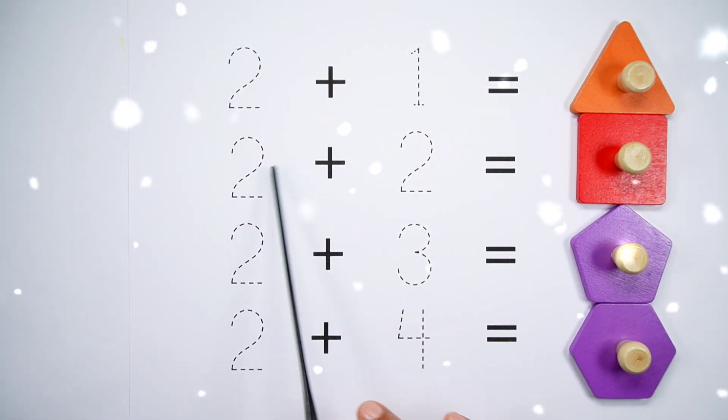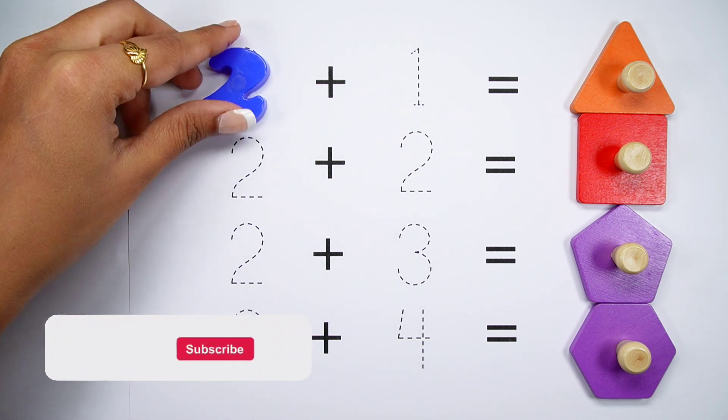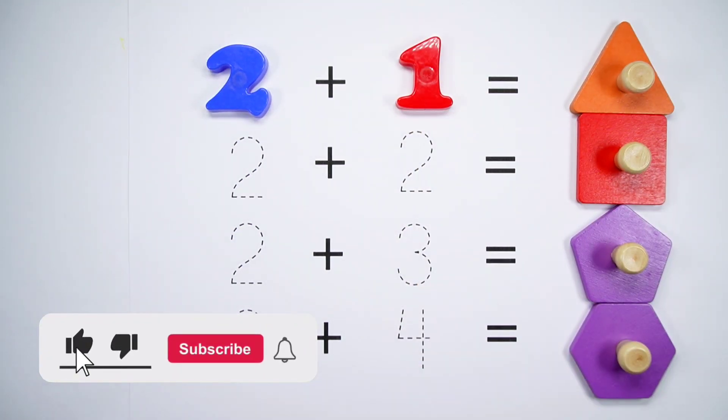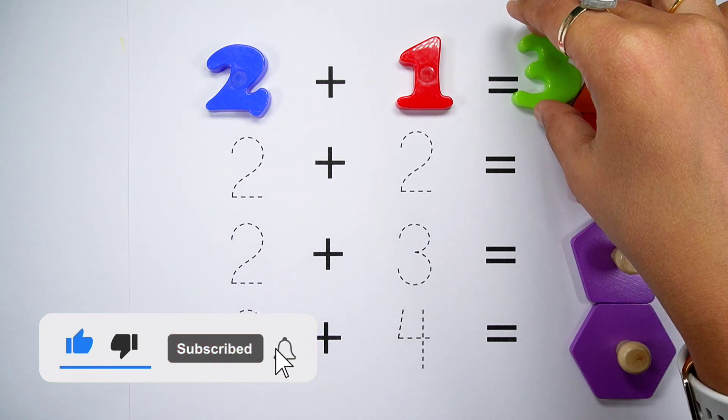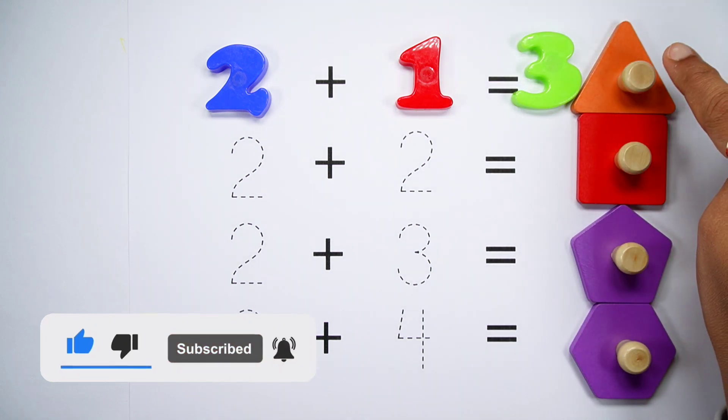Hello kids, let's learn to add some numbers and draw some shapes. 2 plus 1 equals 3. Triangle has 3 sides.